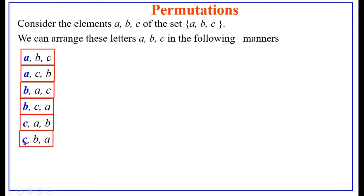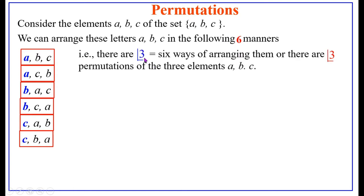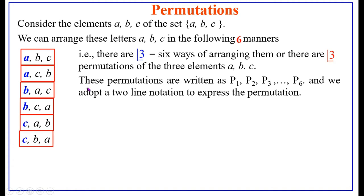The arrangements of {a, b, c} are: a b c, then a c b (b and c are swapped), b a c, b c a, c a b, and c b a. First we arrange starting with element a, then change the positions of b and c, then start with element b and change the positions of a and c. Therefore we can arrange a, b, c in six ways — that is, three factorial equals six. So there are six permutations of the three elements a, b, and c, written as p1, p2, p3, up to p6.